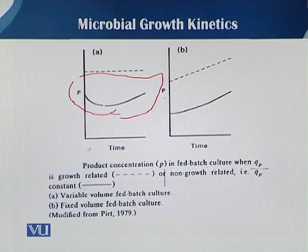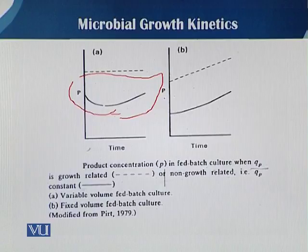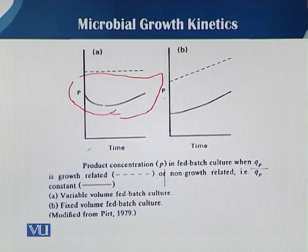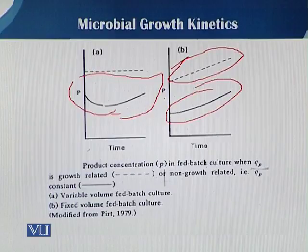The dotted line shows that the product is associated with the biomass, because in variable volume, the biomass concentration remains constant and the product concentration also remains constant. But in the case of fixed volume, due to fluctuation, the product concentration can vary, though it gradually tends to increase. In fixed volume, there is a continuous increase in biomass and a linear relationship in the product concentration.